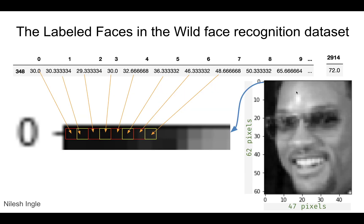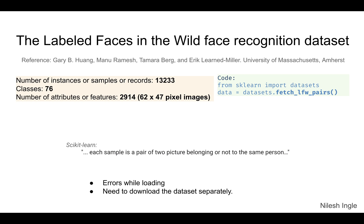In addition to `fetch_lfw_people`, there is a pairs variant. Here we have an example picture of Will Smith, with the data at index 348 showing the grayscale values that represent the pixel values of that particular image.